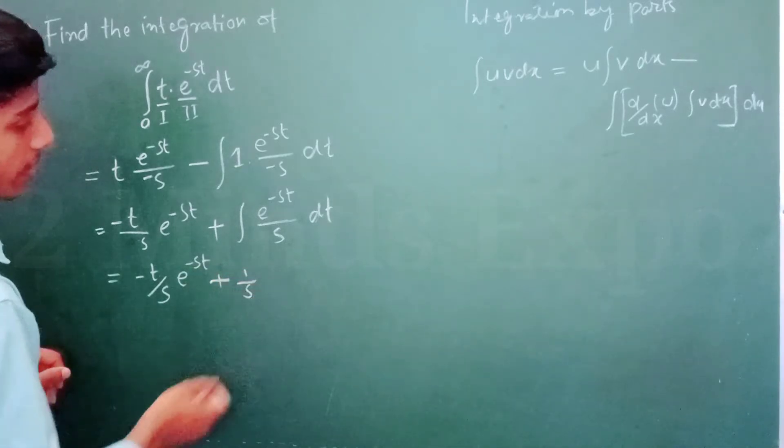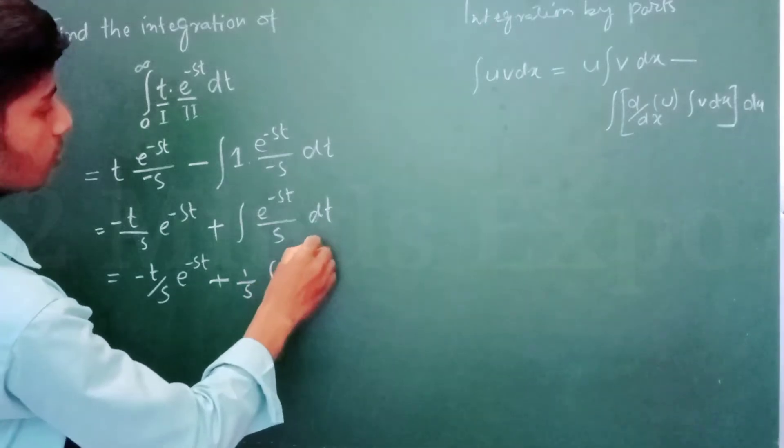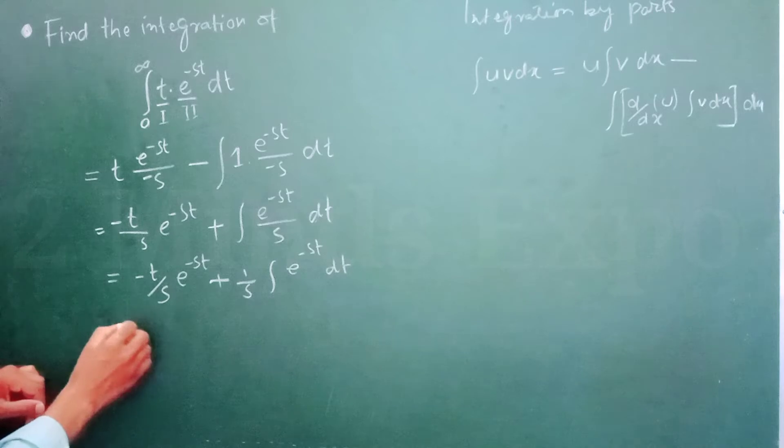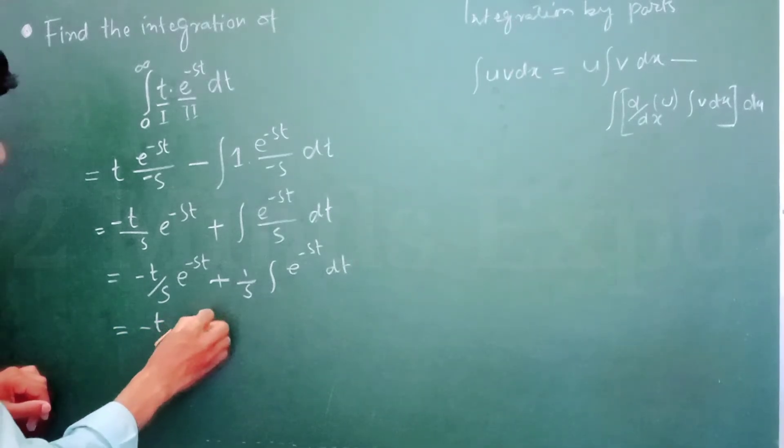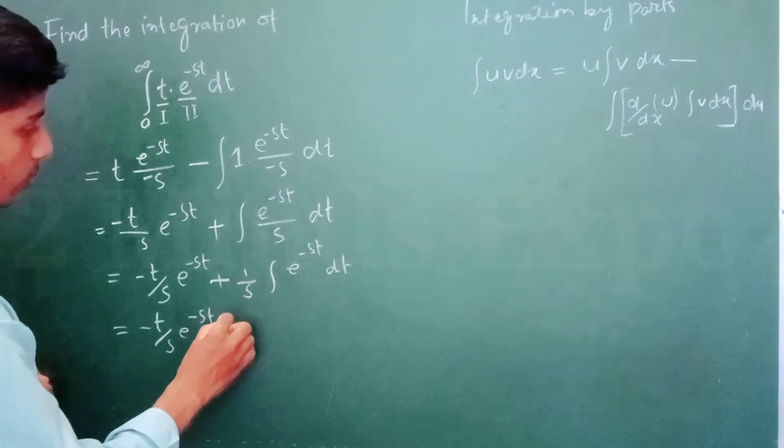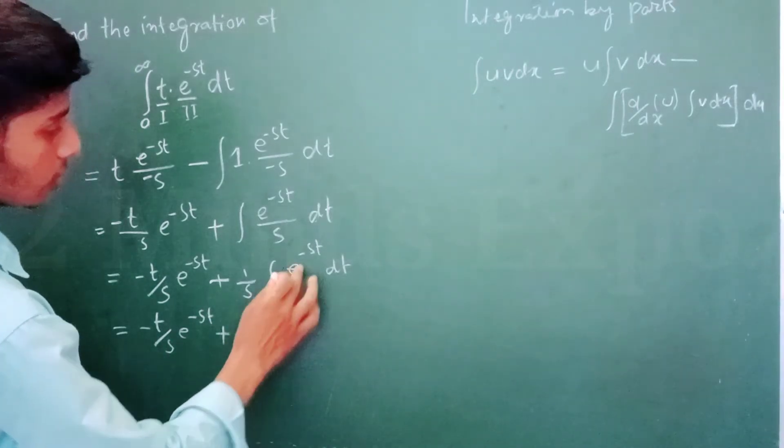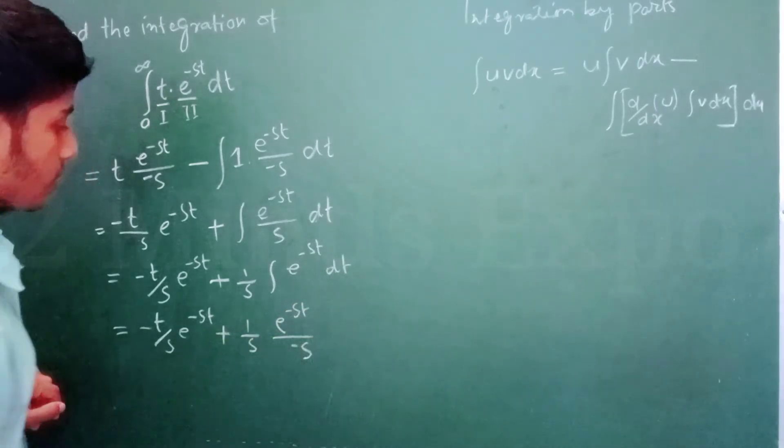Plus one by S e to the power minus ST divided by S dT. I mean minus T by S e to the power minus ST plus one by S. E to the power minus ST divided by S, and integration of this will be e to the power minus ST divided by minus S.